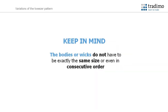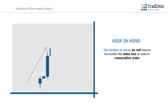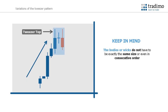Keep in mind that the bodies or wicks do not have to be exactly the same size or even in consecutive order. Here we see a tweezers pattern with a candlestick in between. The important aspect when looking for a tweezers pattern is two wicks with equal highs or lows, indicating that either the buyers or the sellers were eventually overcome after a trend, indicating a potential reversal.